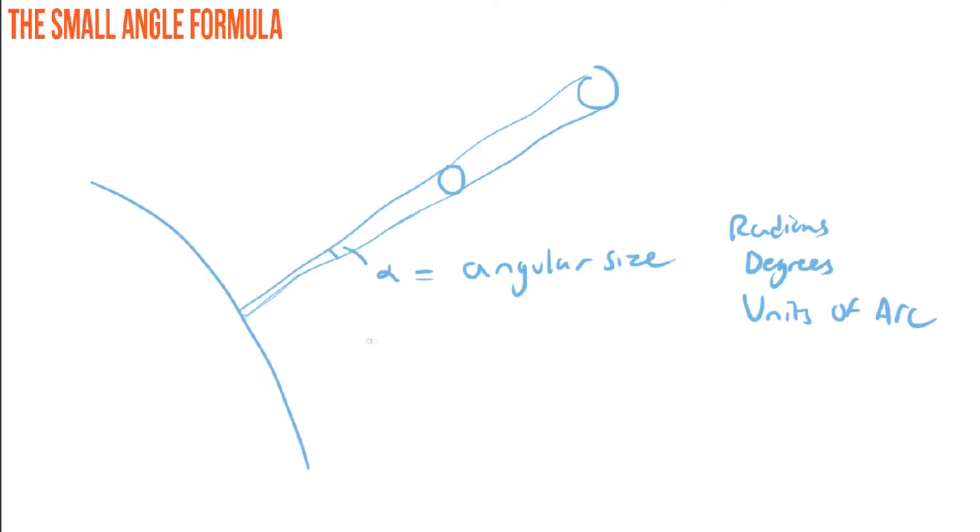So one radian, a full circle, right? The full angle around a circle is two pi radians. One radian is equal to 57.296 degrees.